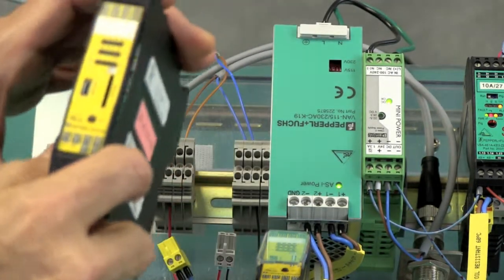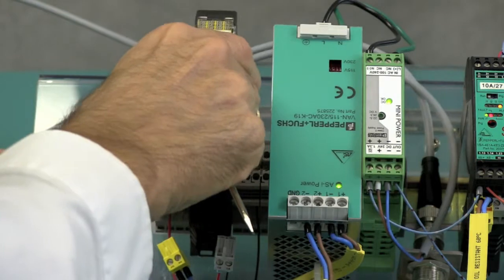Take the failed KE4 off the DIN rail and remount the replacement.